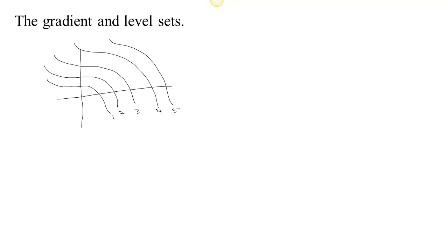So if we have these level sets or level curves in this case, then we can see that if we want to increase our height, we should go in this direction. And if you want to decrease, we should go in that direction. And if you go along the level curve, you won't have any change in height at all.